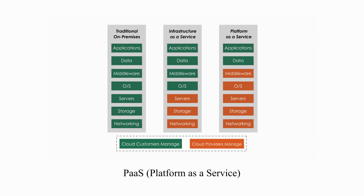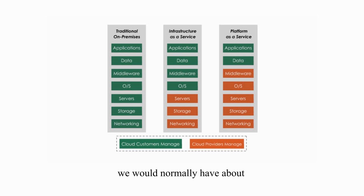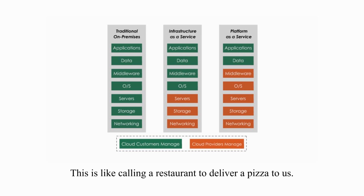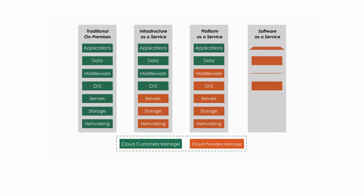PaaS stands for Platform as a Service. This service model provides a platform for developers and companies to create, run, test, host, and deploy applications. It takes away a lot of concerns and issues we would normally have about operating systems and hardware configurations. This service model allows us to focus on applications and data. Using the pizza analogy, this is like calling a restaurant to deliver a pizza to us. All we need to do is make a phone call, set up a table, fix some water or soda to drink, and then wait for the delivery.